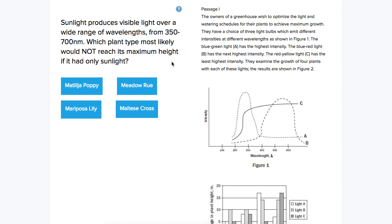So we need to pull information from a couple tables here, or charts, in order to make an inference. We want to rule out which of these plant types would likely reach its maximum height if it had only sunlight. So we get some new information in the question. Sunlight produces visible light over the range of wavelengths from 350 to 700 nm.